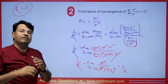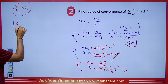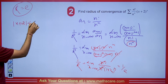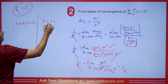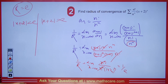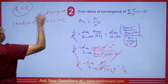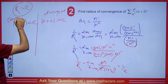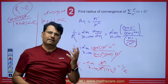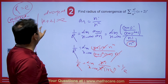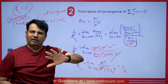The radius of convergence is e. This series will be convergent when |x + 2| < e and divergent when |x + 2| > e. Since the question only asks for the radius, we stop here. You can substitute the boundary values to check convergence at those specific points if needed.